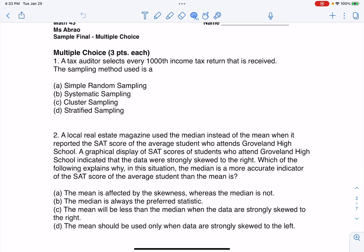Hey, Mount 43, let's go ahead and take a look at our sample final, the multiple choice. So number one, it says a tax auditor selects every thousandth income tax return that is received. The sampling method used is A.